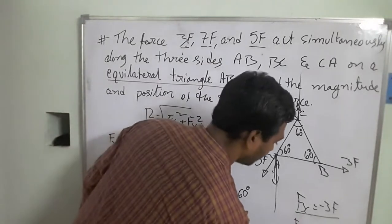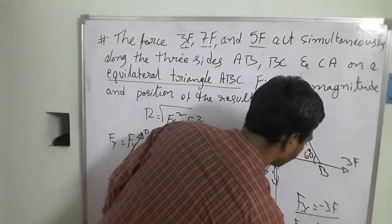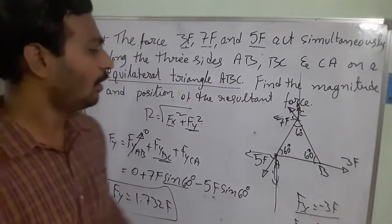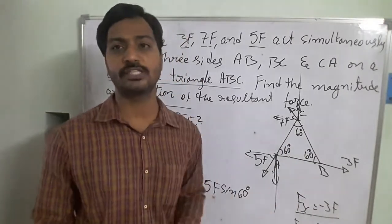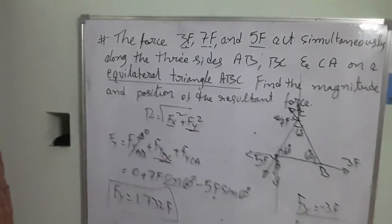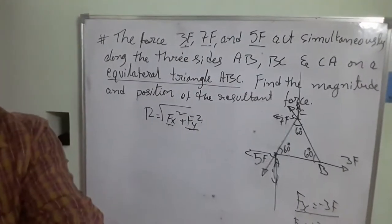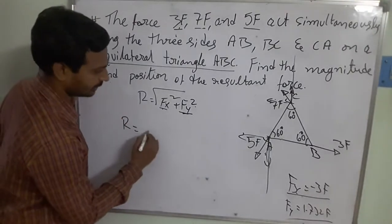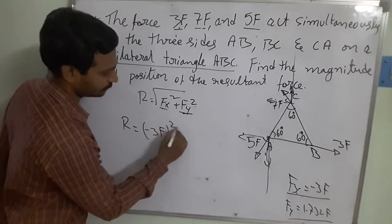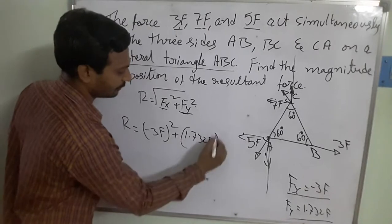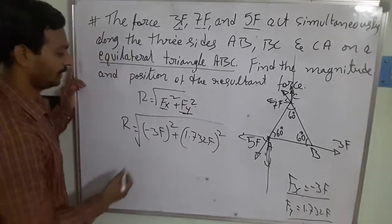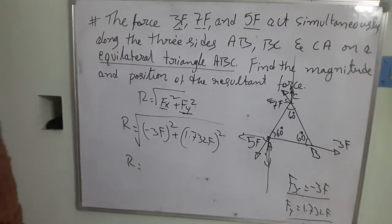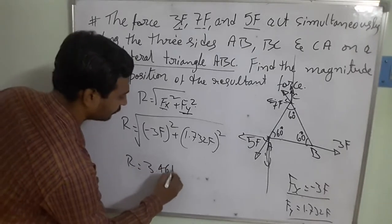So Fy = 1.732f. We have resolved the three forces into two components using a convenient coordinate system. Substituting into the resultant formula: R = √((−3f)² + (1.732f)²) = √(9f² + 3f²) = √(12f²), which gives R = 3.464f.